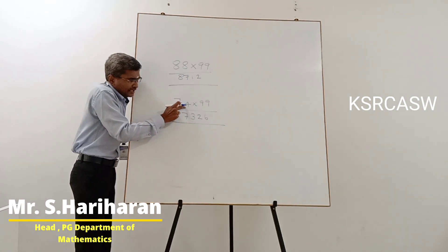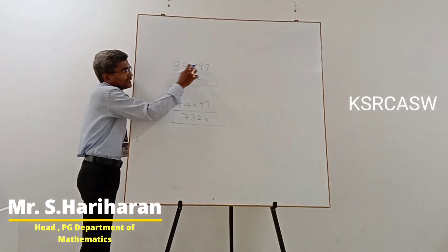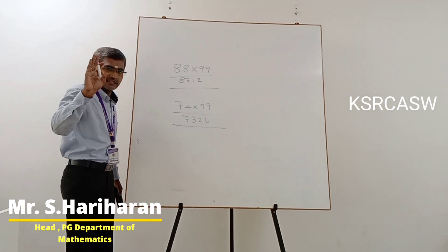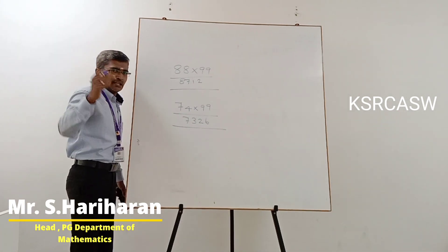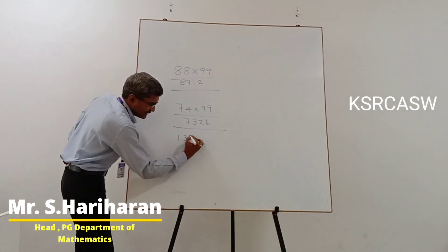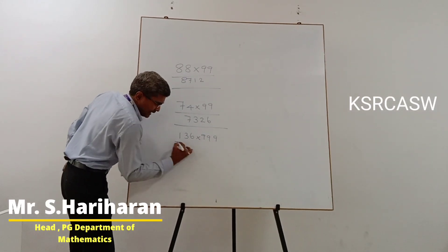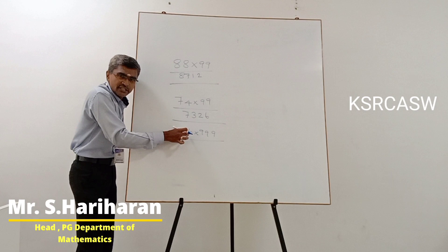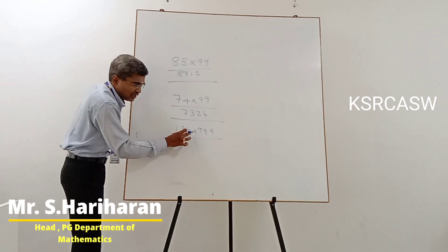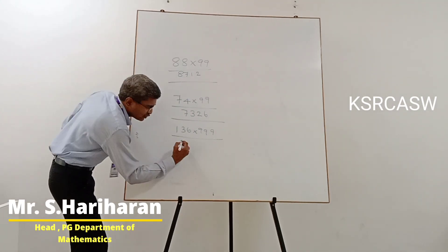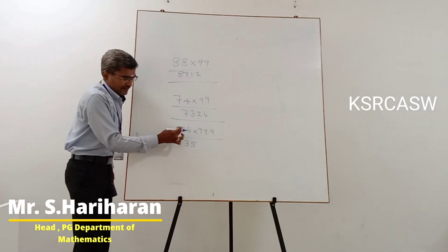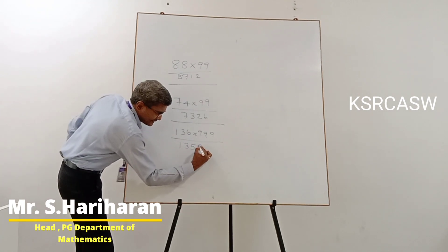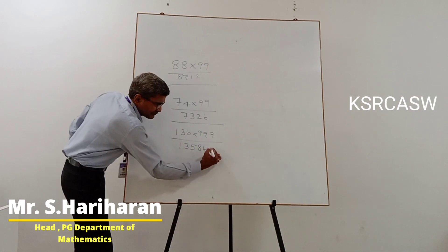So the condition here is: 2-digit number times 99 — the number of digits equals the number of 9s. Similarly, for 3 digits we can use 999. For example, 136 into 999: the number of digits equals the number of 9s. The answer: 136 minus 1 is 135. Then 9 minus 1 is 8, 9 minus 3 is 6, 9 minus 5 is 4. So the answer is 135864.